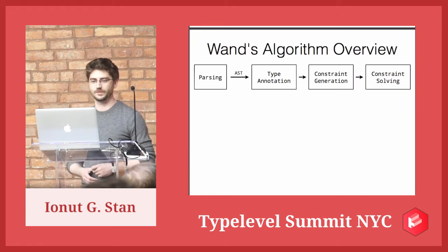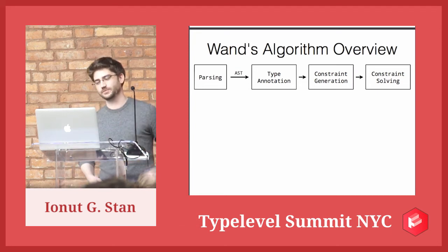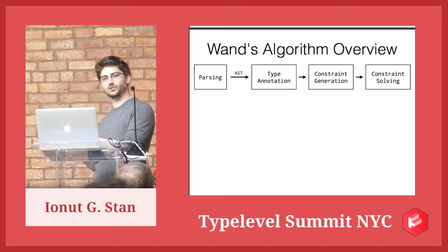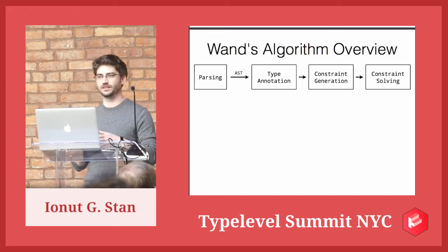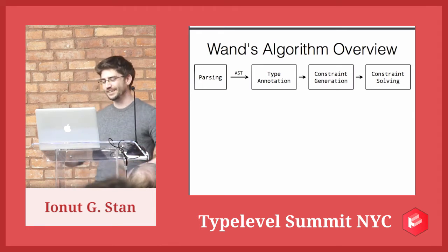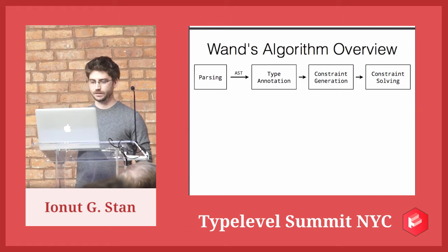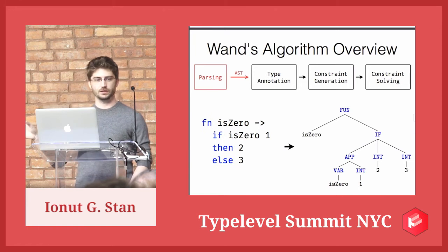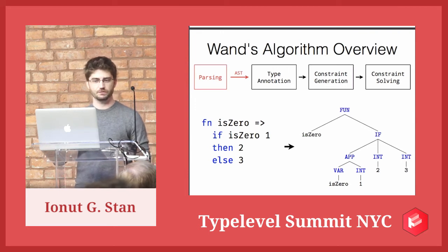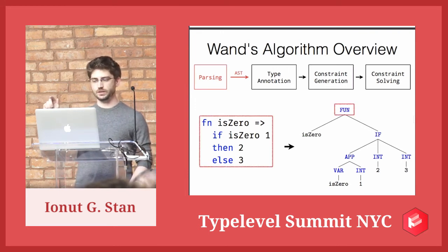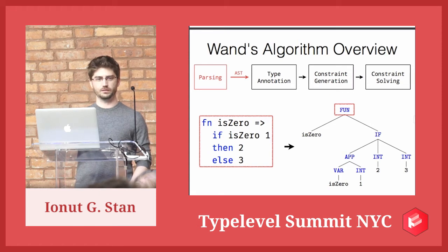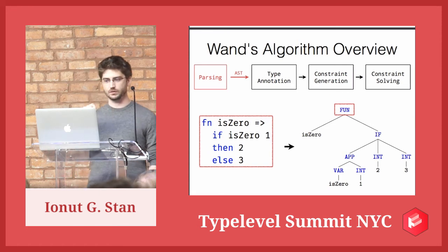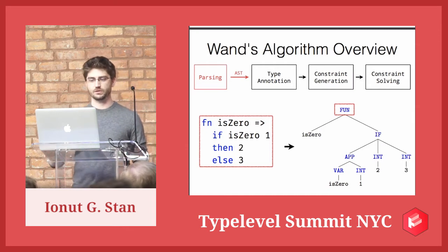So it's a function that returns an integer given a function that takes an int and returns a boolean. This is the parsing part where we just take the source code and build a tree out of it. We see that for this whole expression we have a fun node representing a function. The blue names on the right are names used inside the Scala code, and the actual tree is generated using a LaTeX compiler — I draw the diagram from the actual abstract syntax tree.